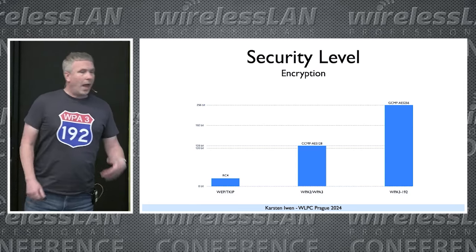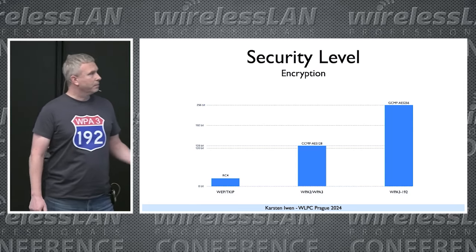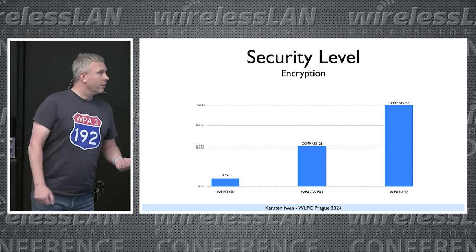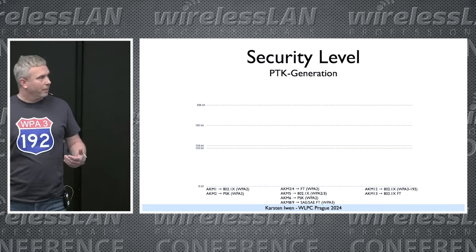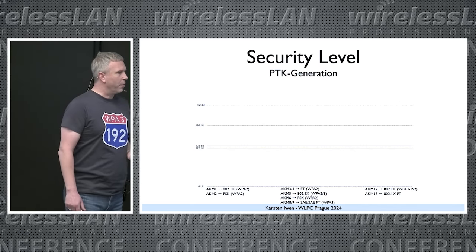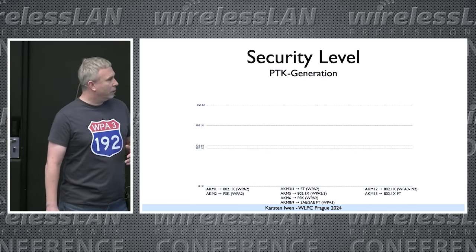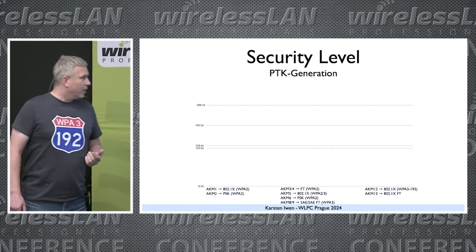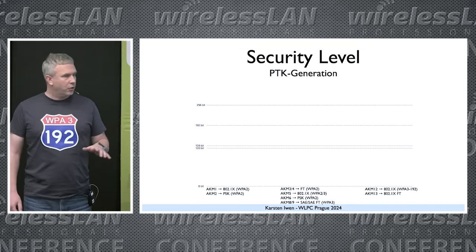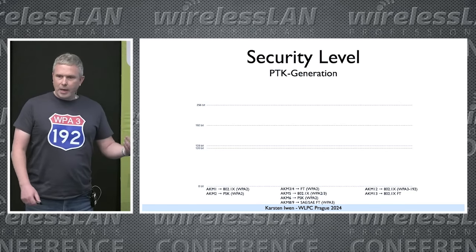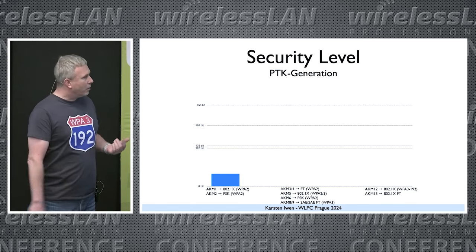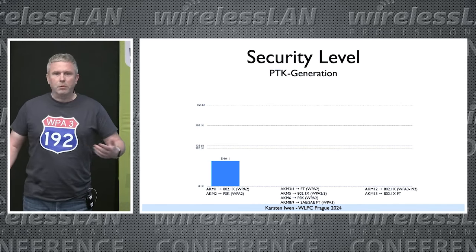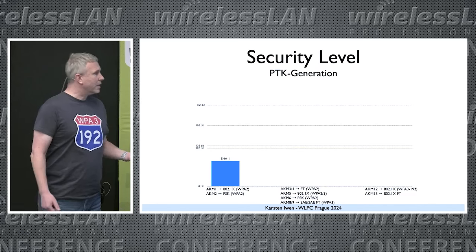In 192-bit mode, we are using AES with 256 bits. To encrypt something we need keys, which are generated with a key derivation function that includes a hash algorithm. The hash algorithm in use depends on the authentication key management suite. With plain WPA2 — typically AKM 1 or 2 — the hash algorithm is SHA-1. The general rule for SHA-1 is: don't use it. It's outdated. It's legacy.